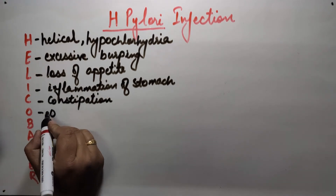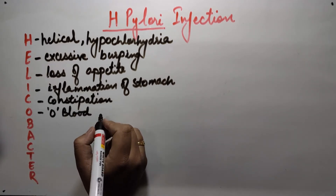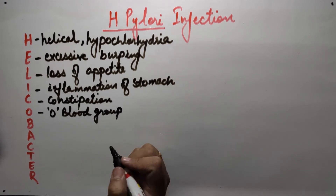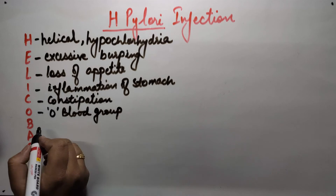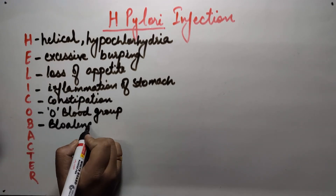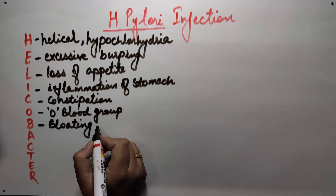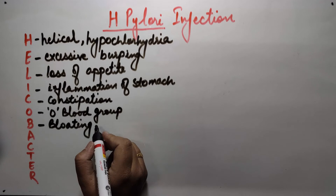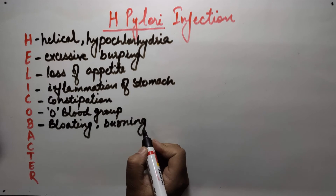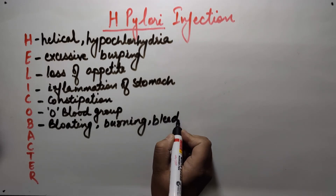C here stands for constipation, though sometimes there might be diarrhea also. O stands for O blood group — patients with O blood group are more prone to get peptic ulcers. B stands for bloating, which is commonly faced by patients of H. pylori infection, and also stands for burning felt in the stomach.